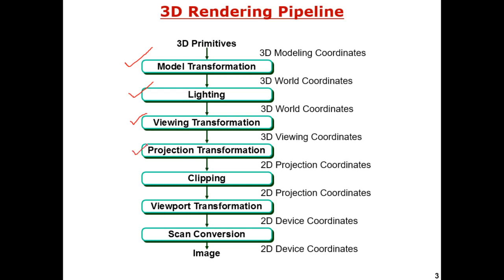The next step is projection transformation. After the viewing selection, the visible portion of the complete scene is projected — an actual image is transferred into a 2D sense. Whatever the scene available in 3D coordinates is going to be displayed in 2D coordinates, that is the XY plane.